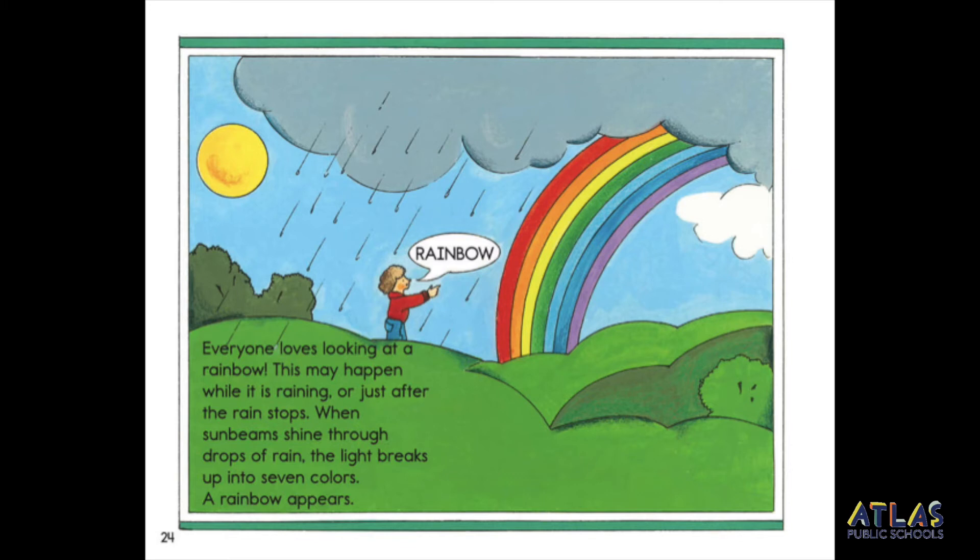Everyone loves looking at a rainbow. This may happen while it's raining or just after the rain stops. When sunbeams shine through drops of rain, the light breaks up into seven colors. A rainbow appears.